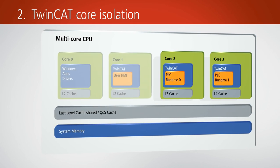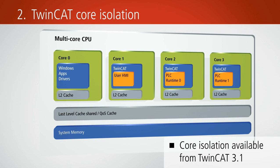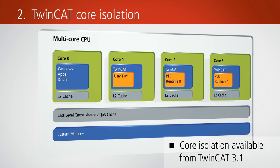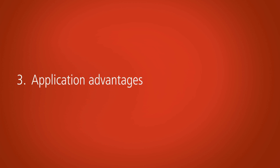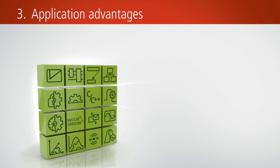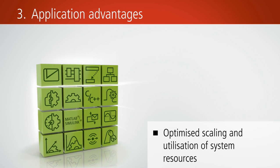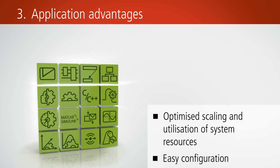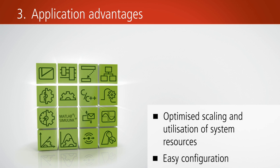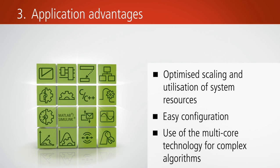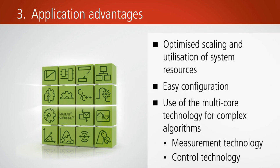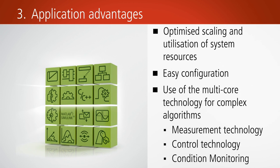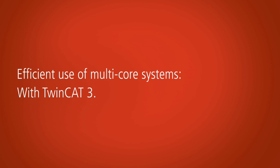TwinCAT core isolation is available from TwinCAT 3.1. TwinCAT 3 enables the optimum scaling and utilisation of modern multi-core systems. The multi-core usage can be directly configured in the TwinCAT system manager. Due to the more efficient use of the available processing power, it is possible to integrate, for example, complex control loops or measuring tasks into the central PC controller.